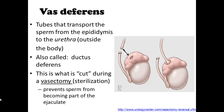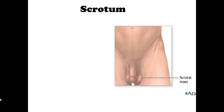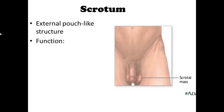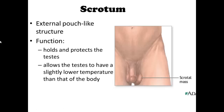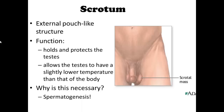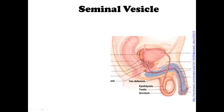Now we're going to talk about the scrotum. It is an external pouch-like structure whose function is to hold and protect the testes. The testes and the epididymis are both inside the scrotum. This allows the testes to maintain a slightly lower temperature than that of the body, which is necessary for efficient spermatogenesis.